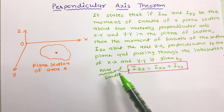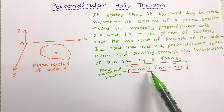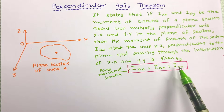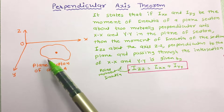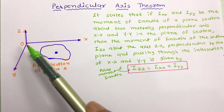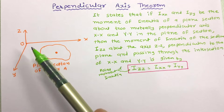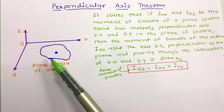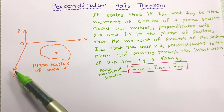Here, IZZ is also called the Polar Moment of Inertia. IXX and IYY are the moment of inertia of this area about two perpendicular axes XX and YY, which are in the plane of the lamina. So the XX axis and YY axis lie in the same plane of the lamina but are mutually perpendicular to each other.